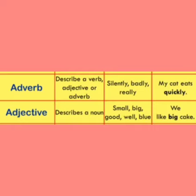Adjective: describes a noun. Examples: small, big, good, well, blue. Sentence: We like big cake.